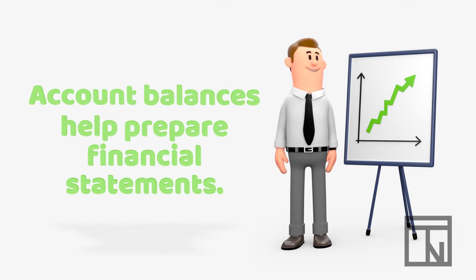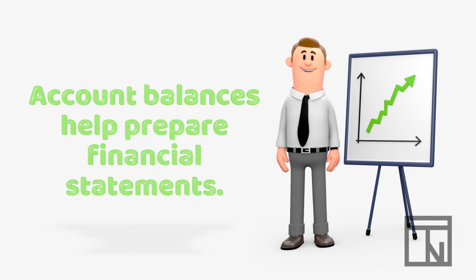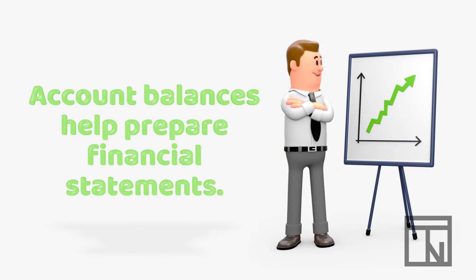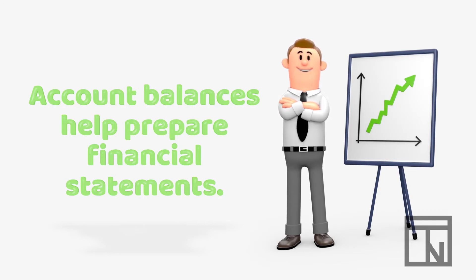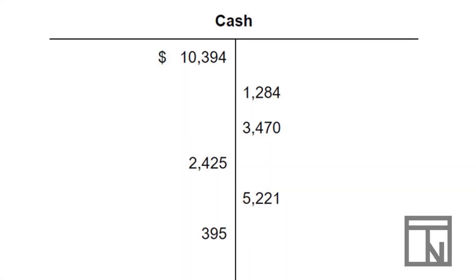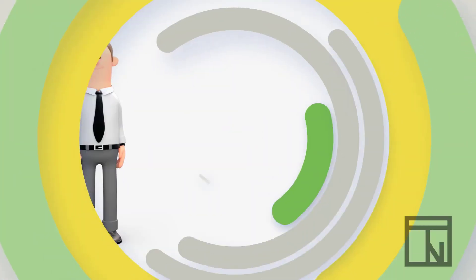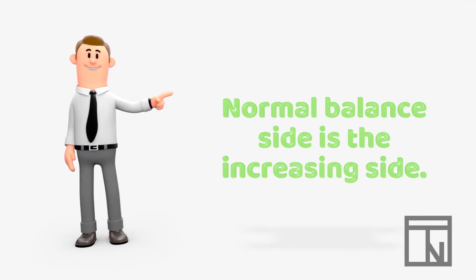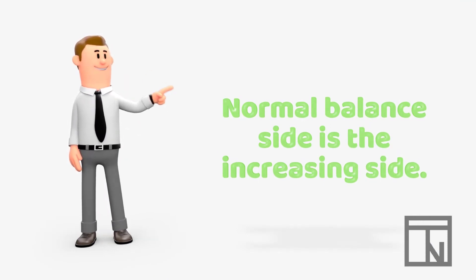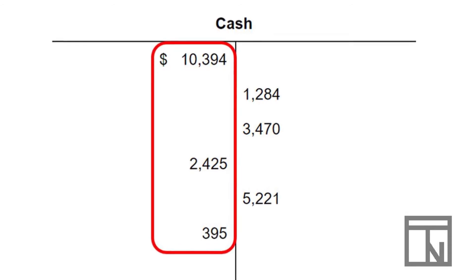When you start adding multiple transactions, one of the confusing parts of T-accounts is totaling the balances in each account so that you know how much is in each account. These balances are very useful as we approach the end of the accounting period and begin creating financial statements. To total a T-account, first add up all of the numbers on the normal balance side of the account. The normal balance is the increasing side of the account. Cash is an asset, so it increases on the debit side, meaning it has a debit normal balance.